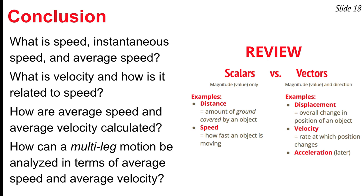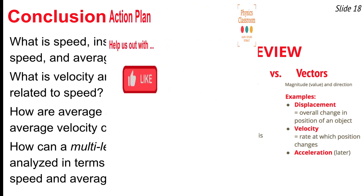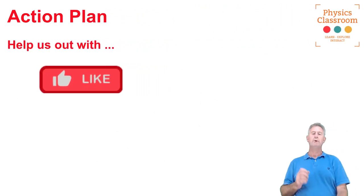We set out to understand two concepts — speed and velocity — to understand what instantaneous speed is and how it differs from average speed, and how velocity relates to speed. We also figured out how to calculate average speed and average velocity using their equations, and we analyzed a multi-leg back-and-forth trip. Accompanying this video is a review table covering scalars and vectors, distance and displacement, speed and velocity. Coming up next, we'll be talking about acceleration — hope you join us!